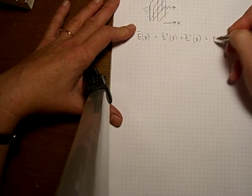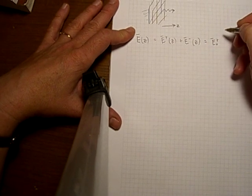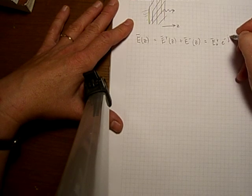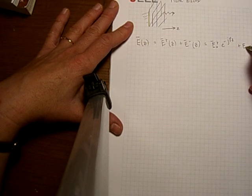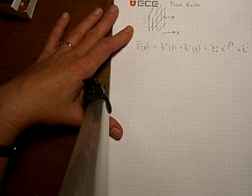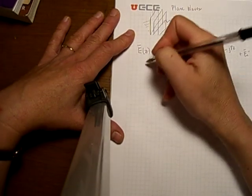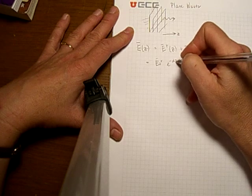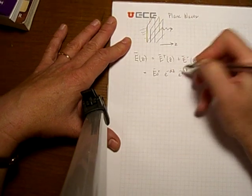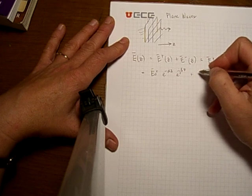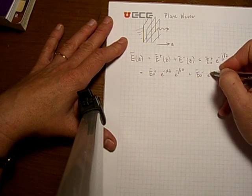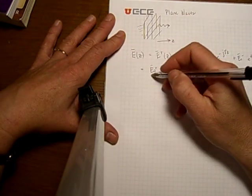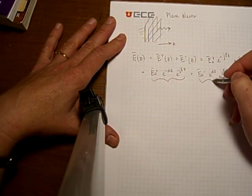We can write this the same way we did with transmission line equations: E₀⁺e^(-jγz) plus E₀⁻e^(+jγz). It also can be written as E₀⁺e^(-αz)e^(-jβz) plus E₀⁻e^(+αz)e^(+jβz). So this gives us a forward traveling wave and a backward traveling wave.